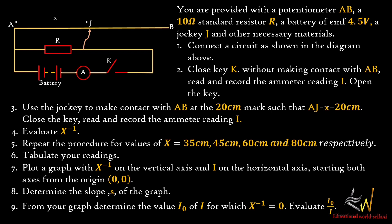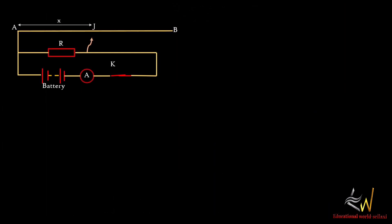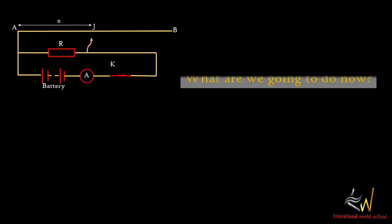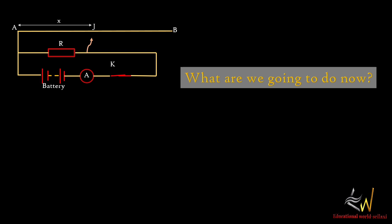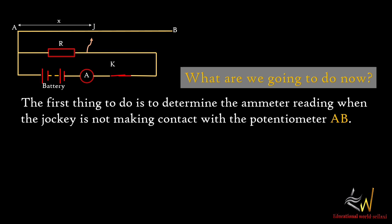Plot a graph with the inverse of x on the vertical axis and I on the horizontal axis, starting both axes from the origin. Determine the slope S of the graph. From your graph, determine the value of I subscript o — the current for which the inverse of x is equal to zero — and evaluate that value.